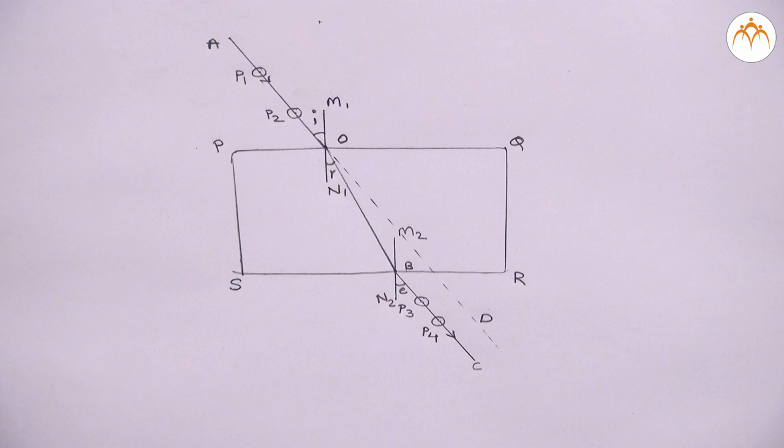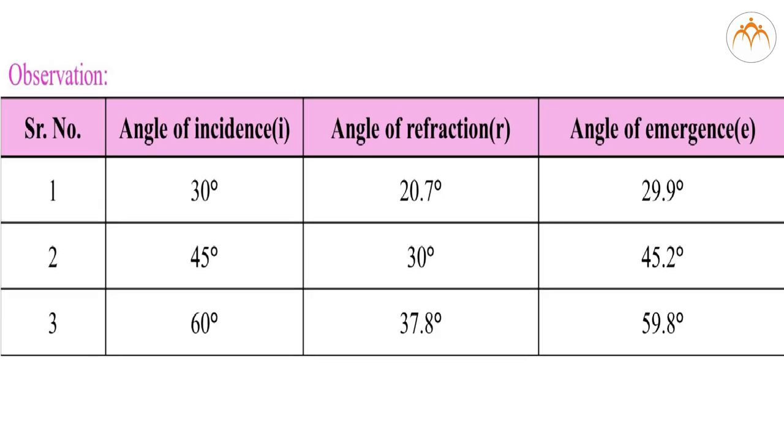Repeat the experiment using angles 45 degrees and 60 degrees instead of angle 30 degrees. Fill in the observation table in which you are supposed to write angle of incidence, angle of refraction, and angle of emergence. That is I, R, and E.